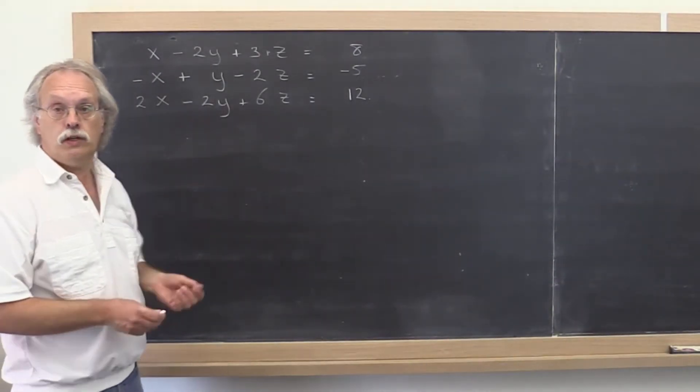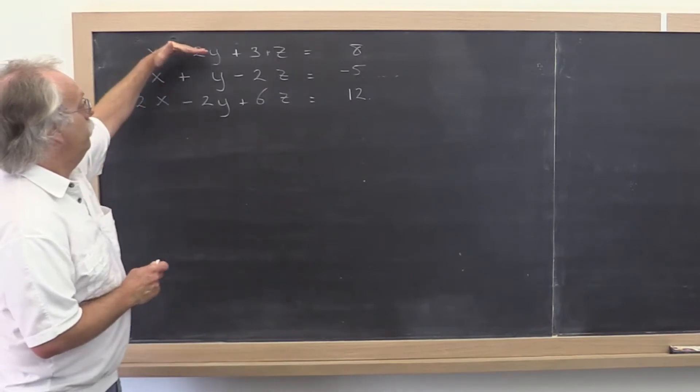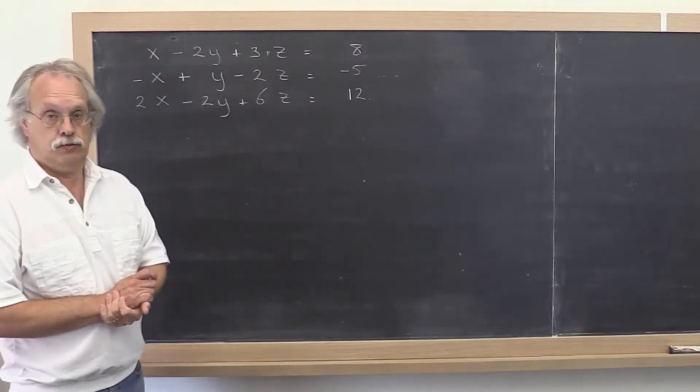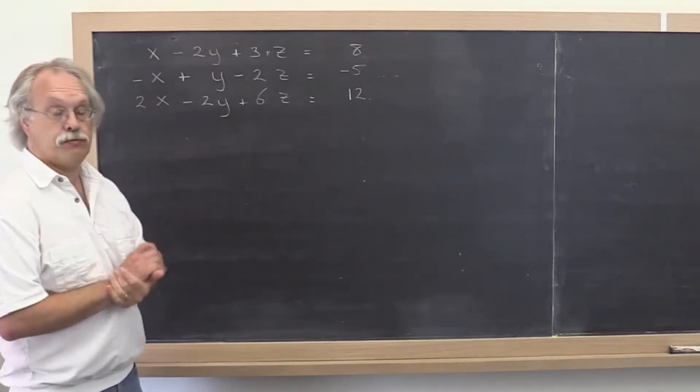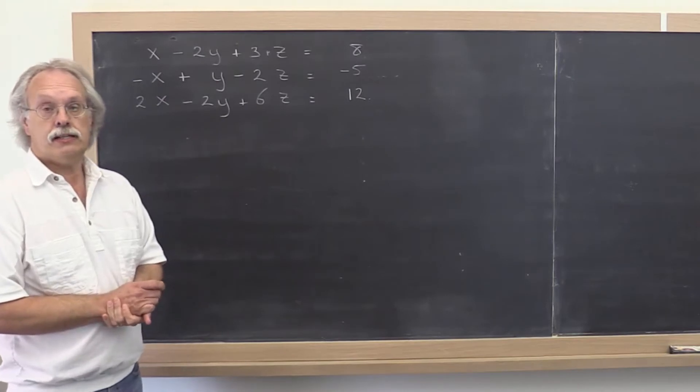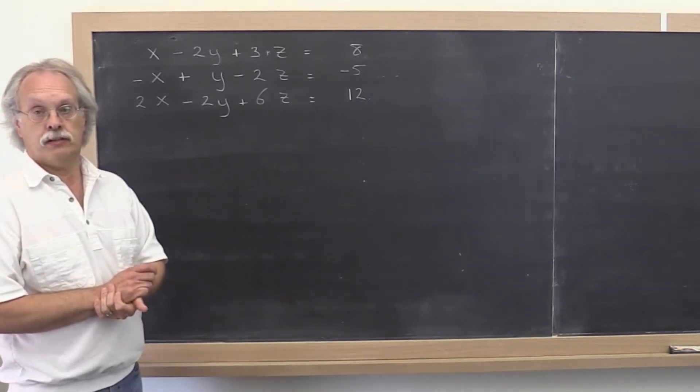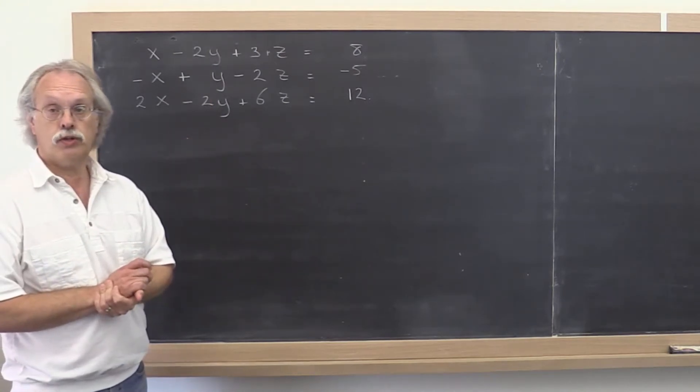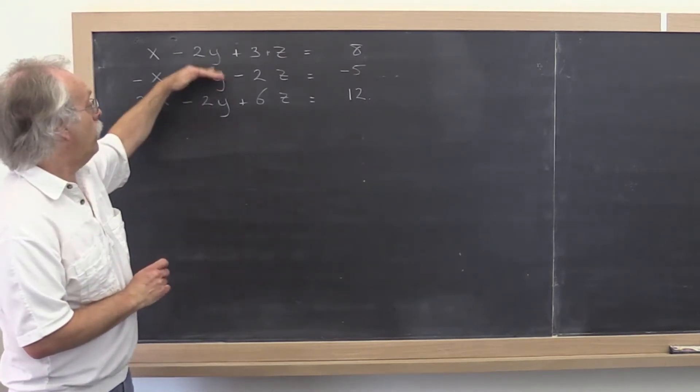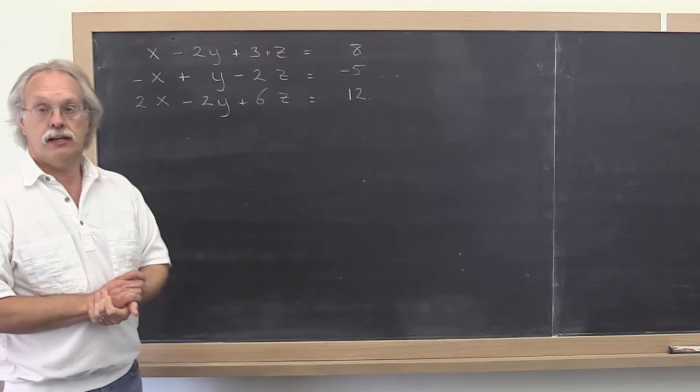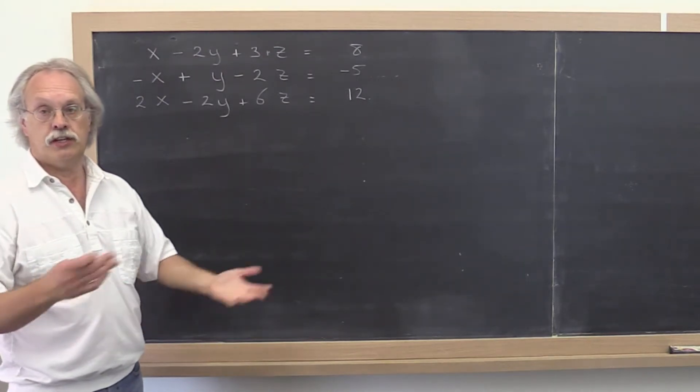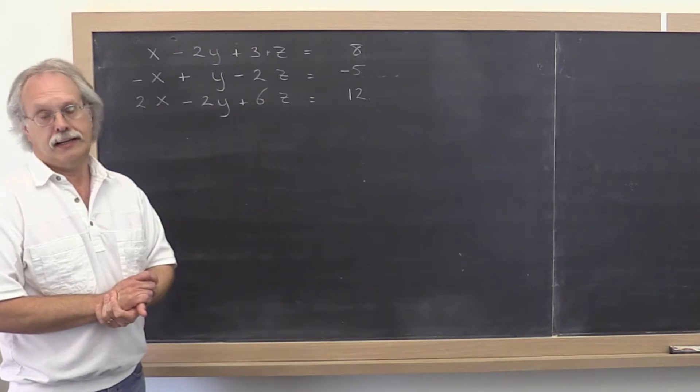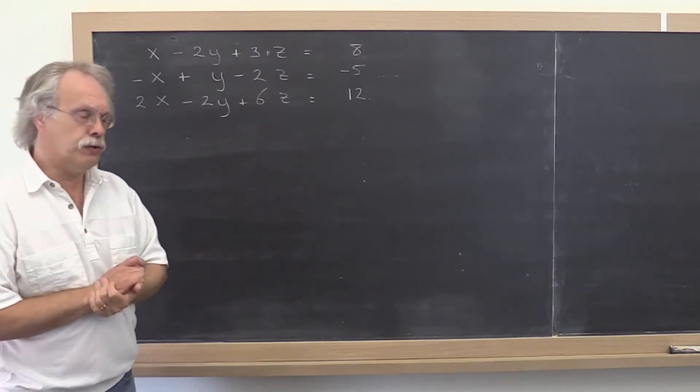So what do we have here? We have three equations in three unknowns, three linear equations in three unknowns, and somewhere in your math career you were taught how to solve this. What were you taught? Well, you can take multiples of rows and add or subtract them off of other rows and not change the solution. Unless you multiply by zero, but we're not going to do that.